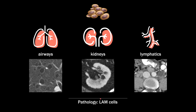Pathologically, LAM is considered a low-grade neoplasm, characterized by proliferation of cell clusters called LAM cells, which resemble smooth muscle. The origin of these cells is not fully understood, but LAM cells can proliferate in the lungs, kidneys, and lymphatics. In the lungs, they cause cyst formation.